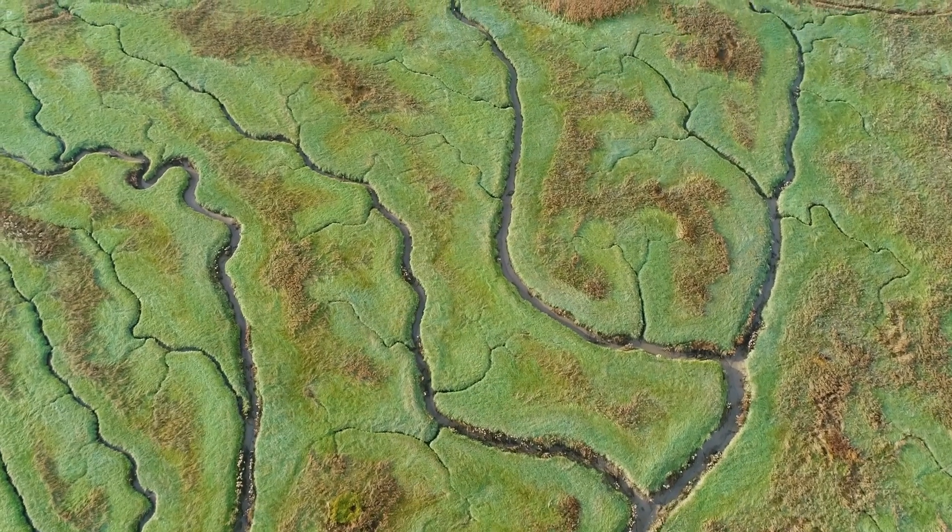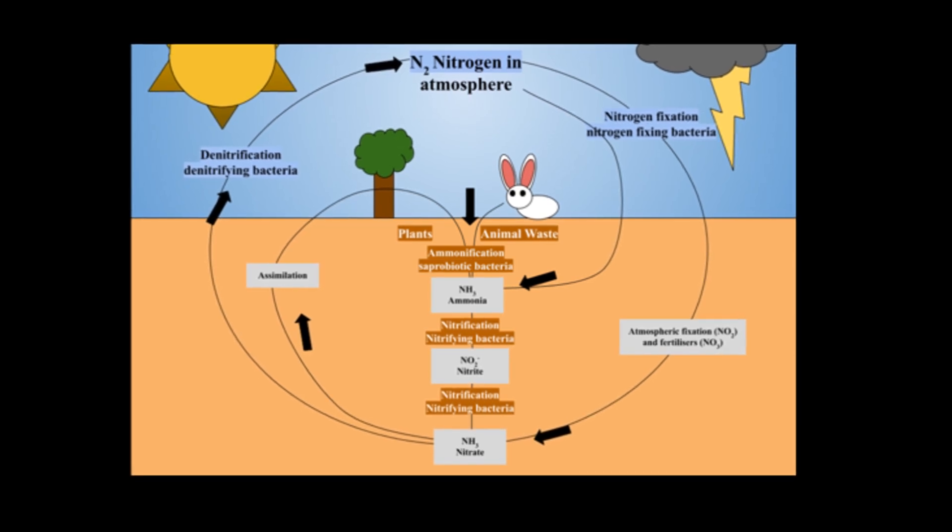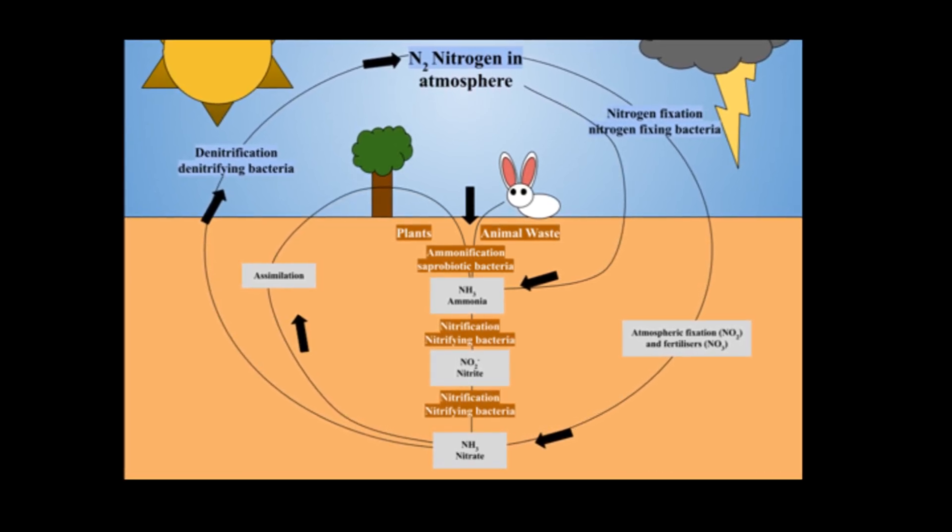While the ozone layer wouldn't be completely destroyed, it could be significantly weakened, leading to higher levels of UV radiation. This could have impacts on human health, ecosystems, and marine life. The nitrogen cycle could also be disrupted, potentially causing acid rain and affecting plant life and ocean chemistry.